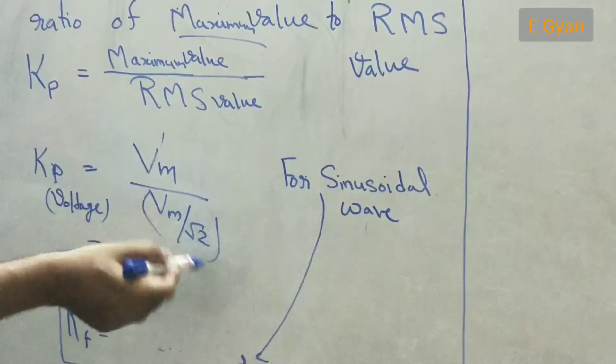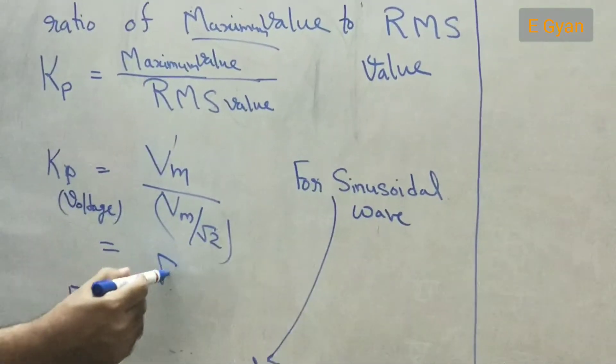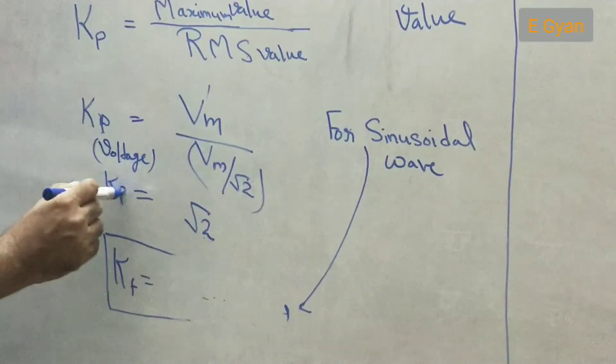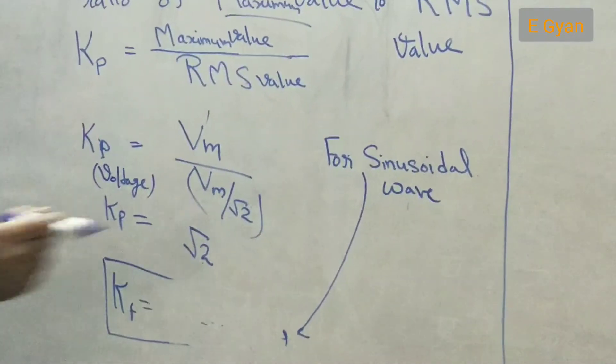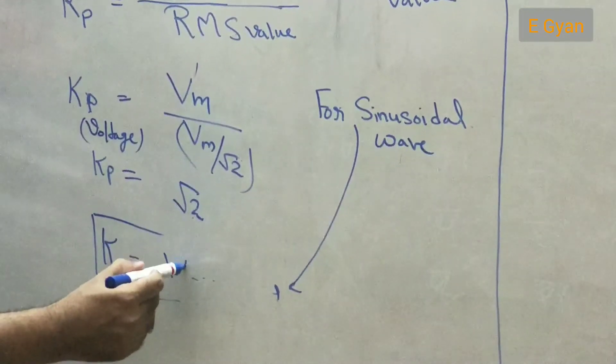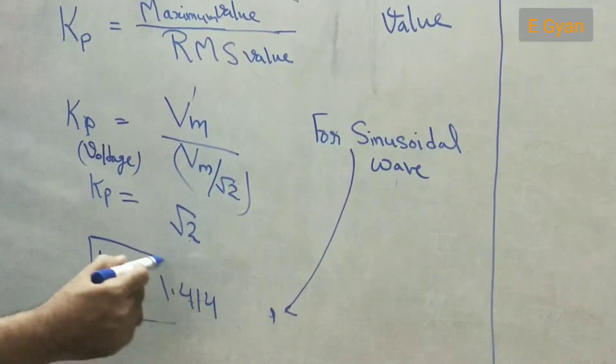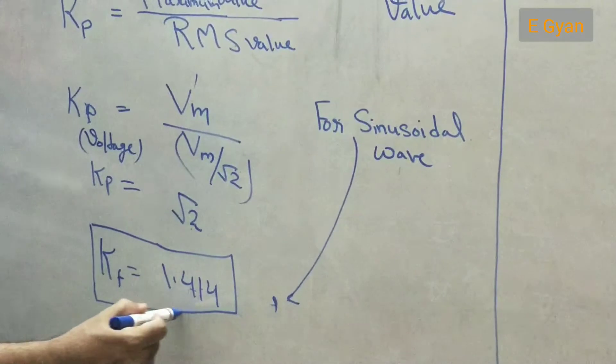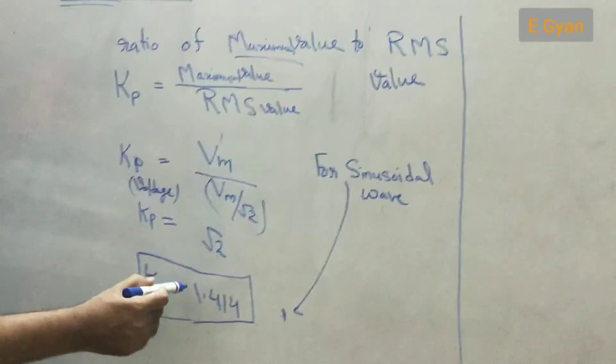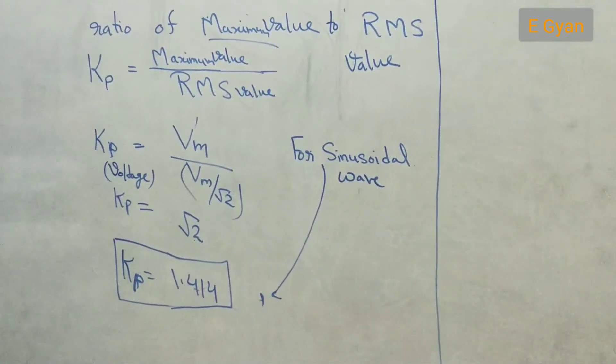This Vm, Vm will get cancelled and this root 2 will get over and the answer will be Kp is equal to under root 2 and the value of under root 2 we know is 1.414. So what is our peak factor? Peak factor comes out to be 1.414.